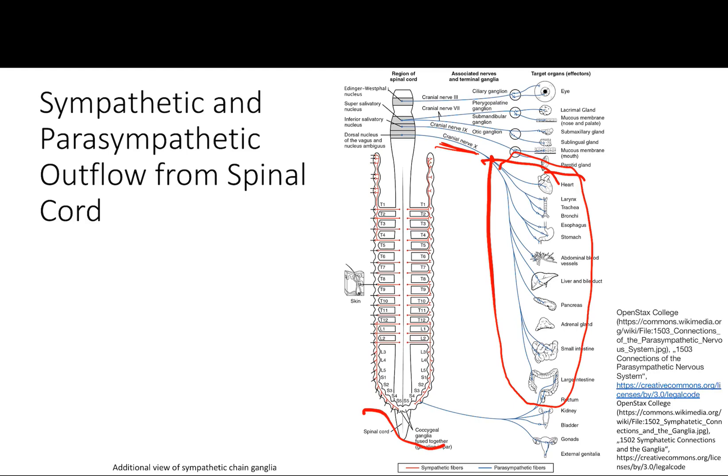The next thing is the sympathetics, which are a little different. Parasympathetics travel from the spinal cord or brain stem a very long distance and synapse near or on the organ of interest. Sympathetics, on the other hand, leave the spinal cord and have a long chain of ganglia right next to the spinal cord where they synapse, and then they travel to wherever they need to go — muscles, skin, sweat glands.